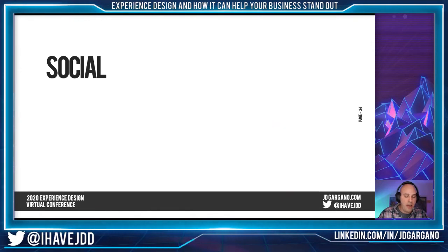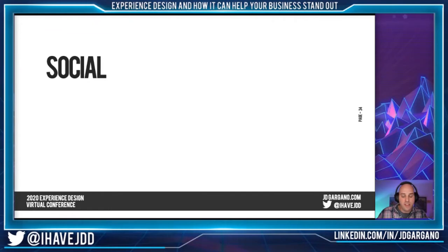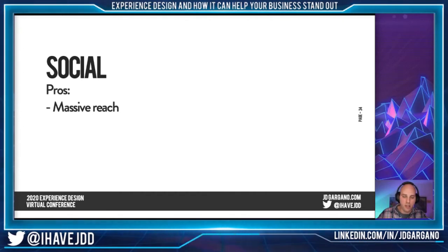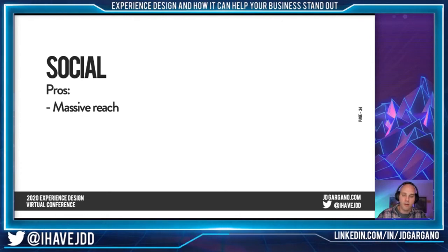From a social perspective, how are some ways that we can enhance the experience for people using their phones or Instagram or Facebook? Let's talk about some pros of social media — massive reach. We all know the power of social media. We know how a tweet can blow up and reach across the world instantaneously. Same thing with videos going viral on TikTok and Snapchat, Instagram, Facebook. We know that the reach is massive, and we know it's super cost effective. It doesn't cost much to put together a tweet or a nicely designed element on Instagram.